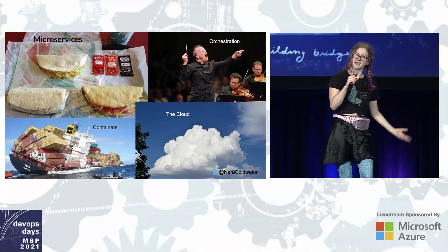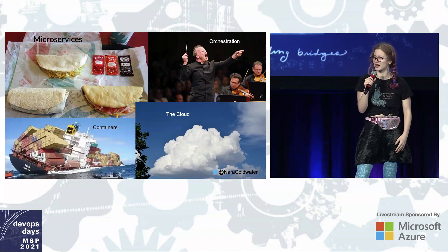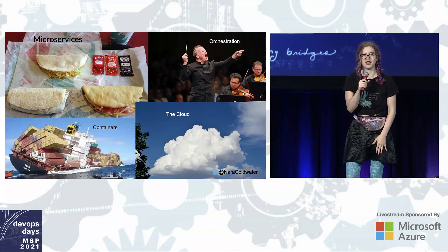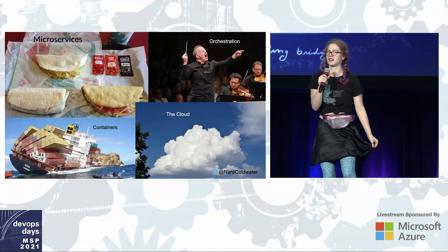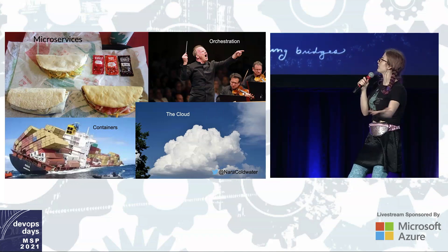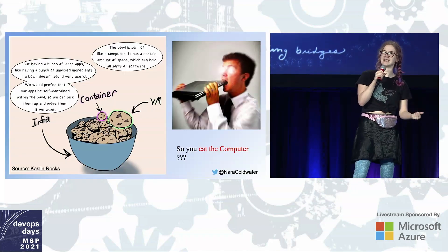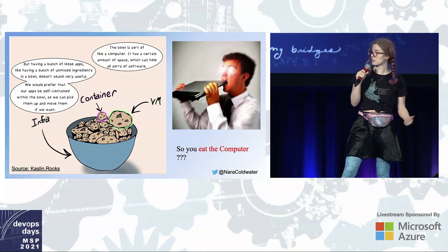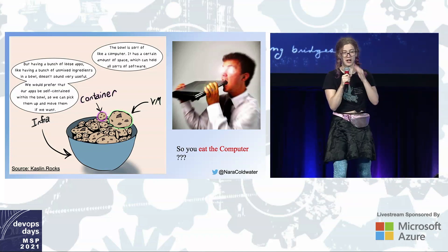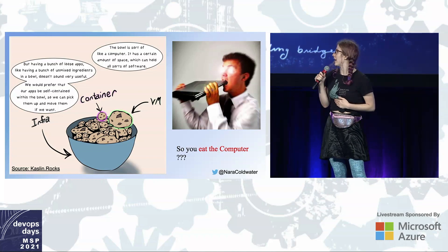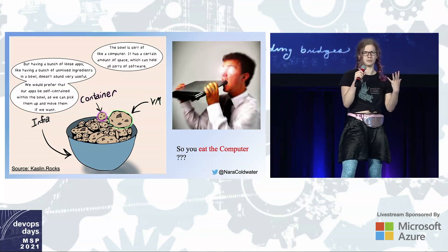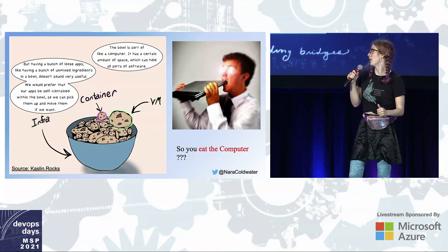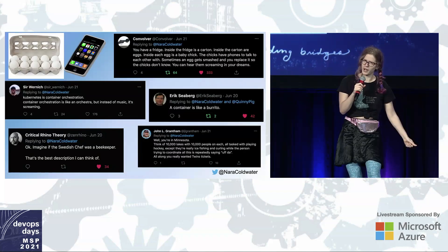As adults in my life, or at tech conferences, try to explain to me what Kubernetes is, I have found that they often use a lot of metaphors, and a lot of them are a wide variety of helpful or not helpful. This one is a fave of mine from Caslin Rocks — telling me that my computer is a cereal or a cookie bowl and that my cookie is a container. That's confusing. Why is the bowl not the container?